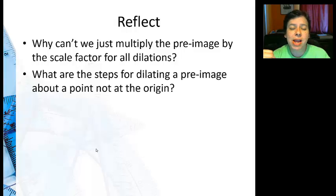What are the steps for dilating a pre-image about a point not at the origin? Well, just translate both. The same way you get the point to the origin, translate your pre-image. Do your dilation and translate back.